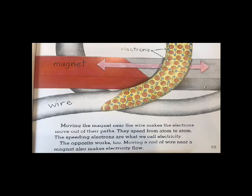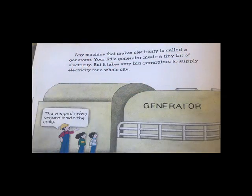The opposite works too. Moving a coil of wire near a magnet also makes electricity flow. Any machine that makes electricity is called a generator. Your little generator made a tiny bit of electricity. But it takes very big generators to supply electricity for a whole city.